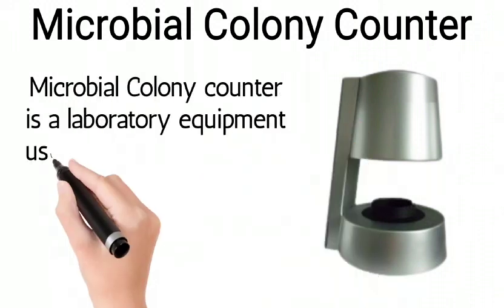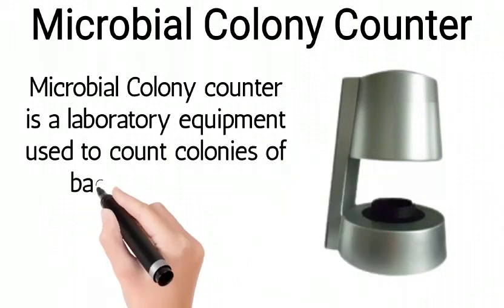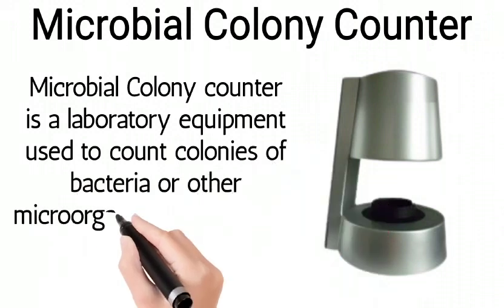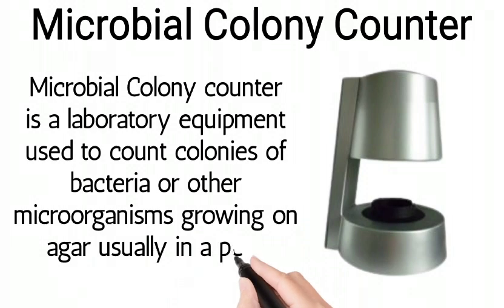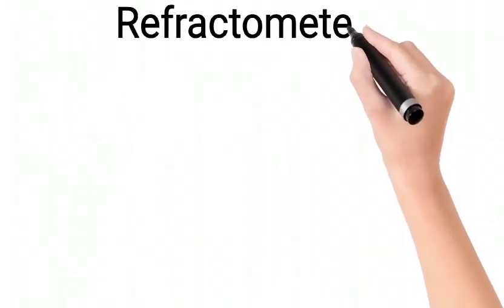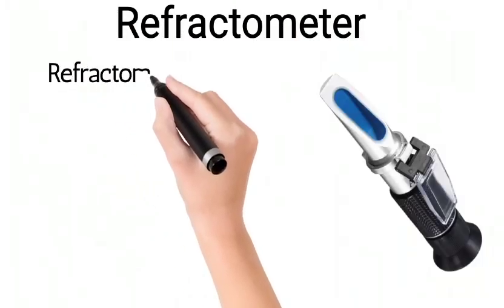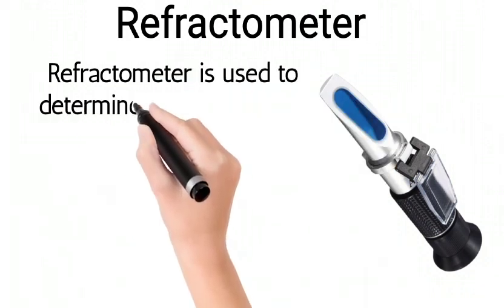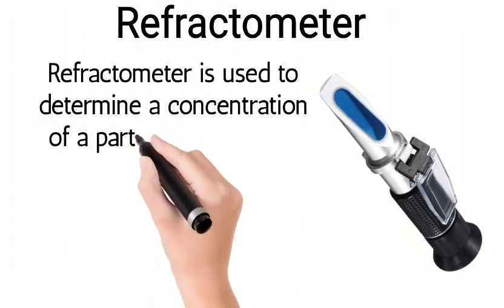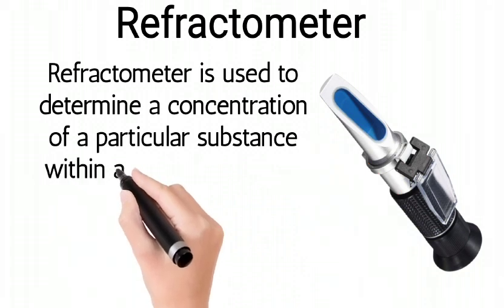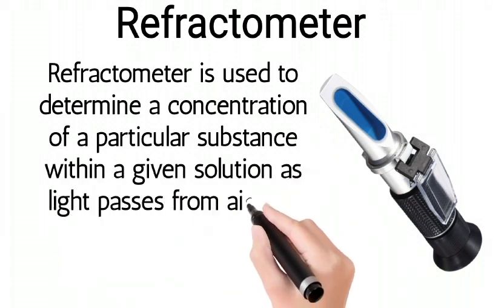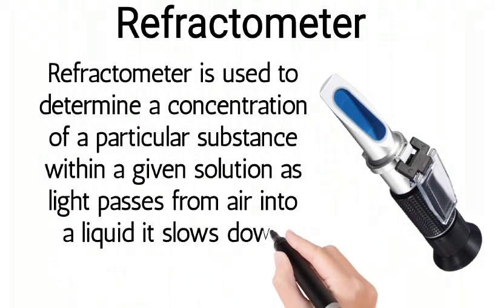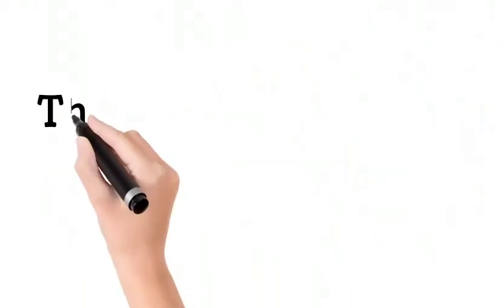Microbial colony counter: a laboratory instrument used to count colonies of bacteria or other microorganisms growing on agar, usually in a petri dish. Refractometer: used to determine the concentration of a particular substance within a given solution as light passes from air into a liquid and slows down.